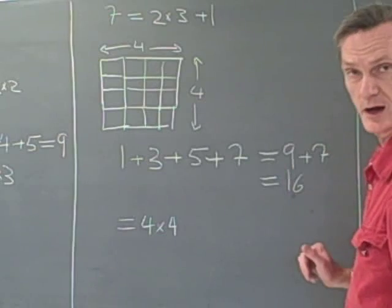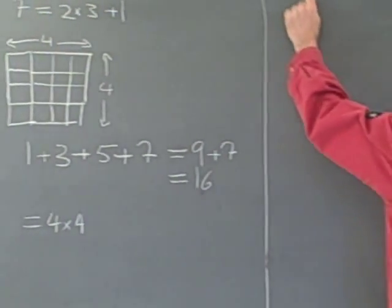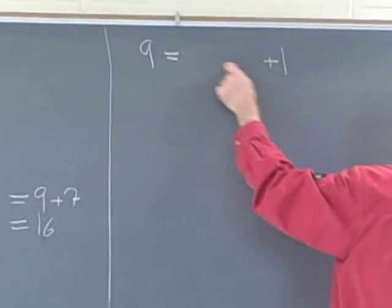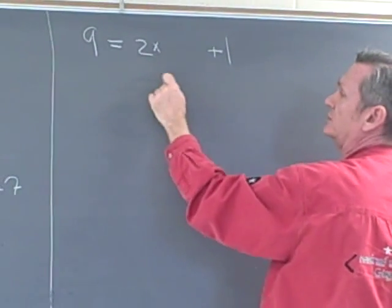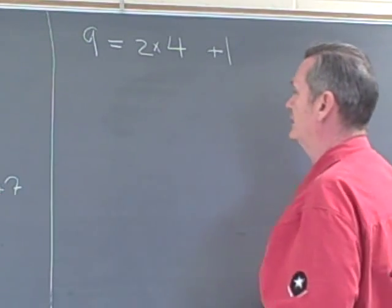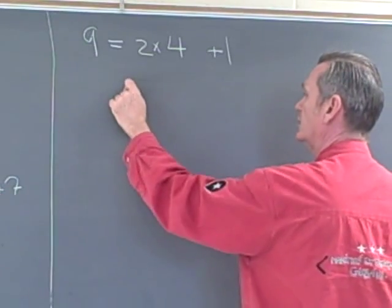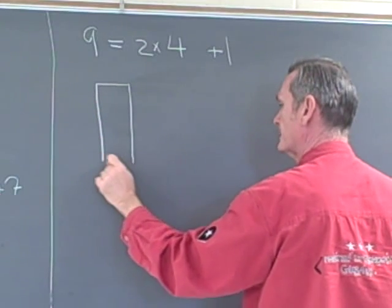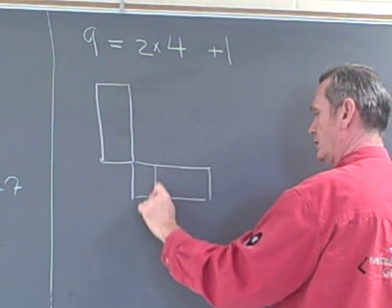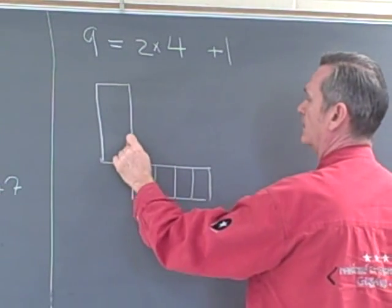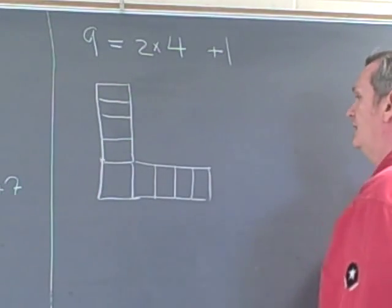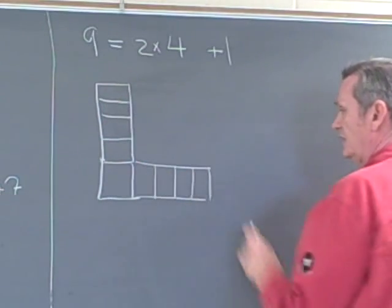Let's add on one more odd number. Nine is an odd number, and as an odd number it's one more than an even number, so it's one more than two times four — nine is one more than eight. So we want to take two times four: here's one set of four, and then another set of four, giving us two times four, and we add one more on there. So that's our ninth piece.